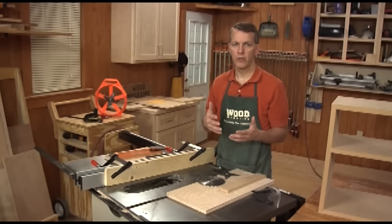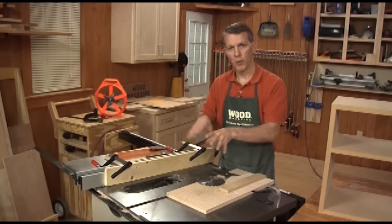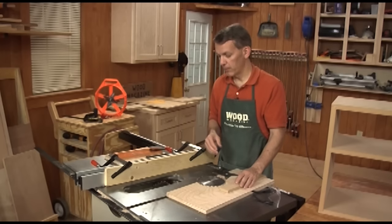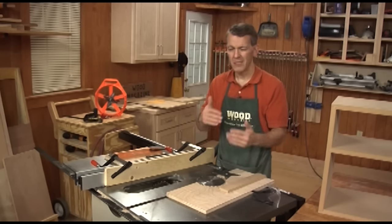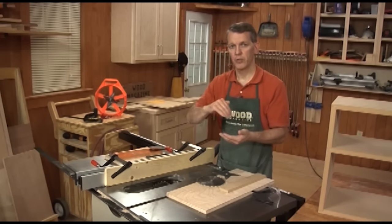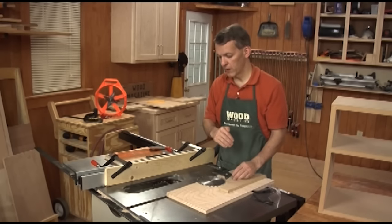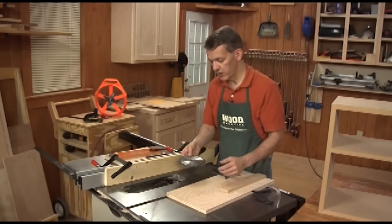To cut a rabbet on the table saw, you could use just a standard blade to make a whole bunch of repeat cuts across the blade. That works. It does tend to leave a lot of score marks where each time the blade went past, you might have a score mark. A better way to do it is to get yourself a dado blade.